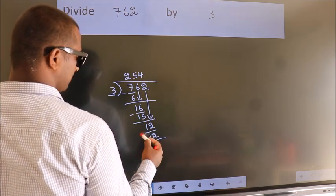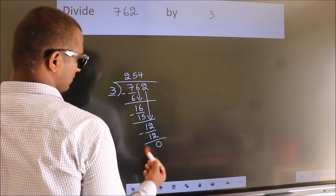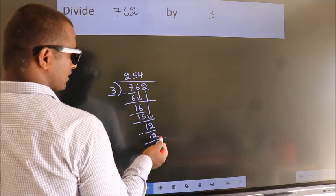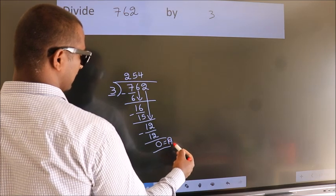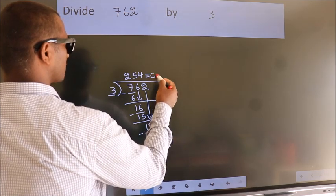Now we subtract and get 0. No more numbers to bring down, so we stop here. This is our remainder. This is our quotient.